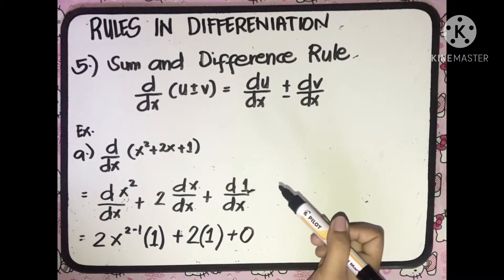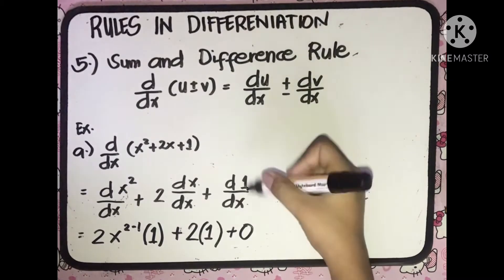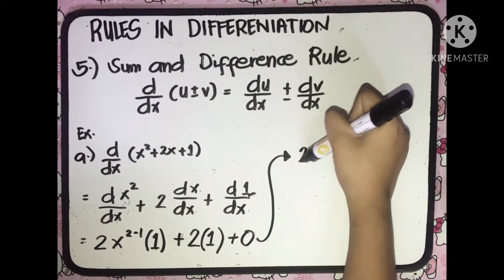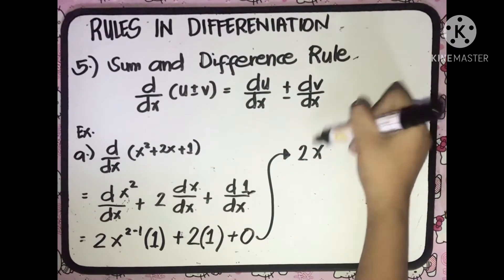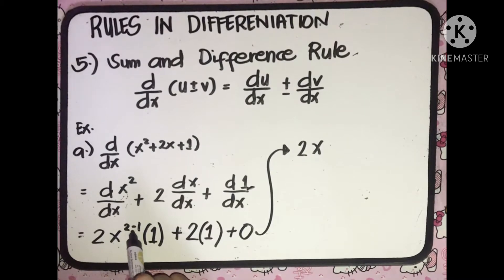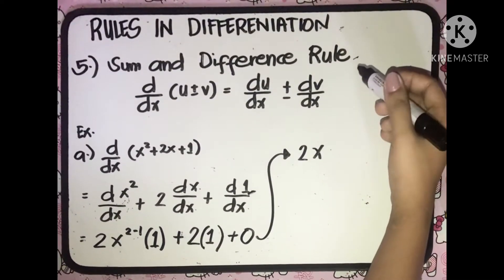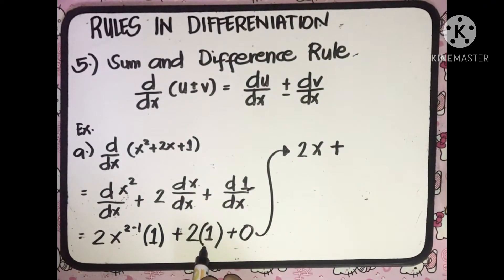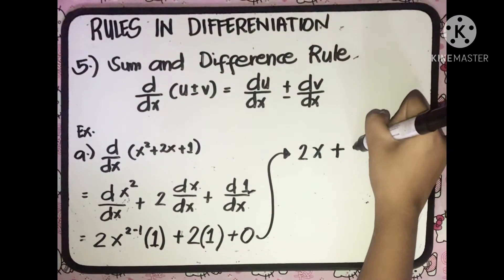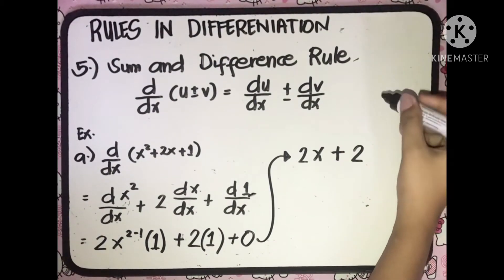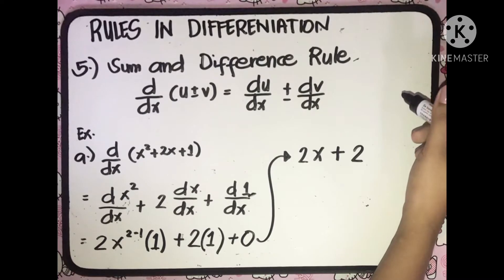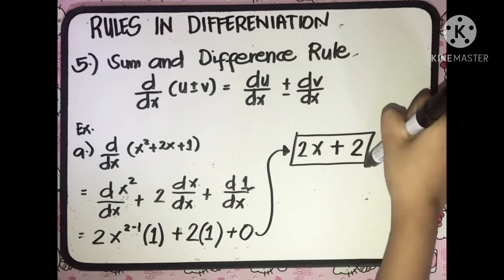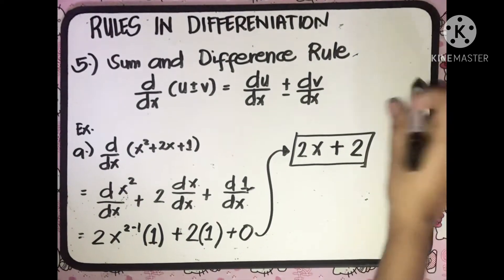So we have plus 0. Simplifying: 2 multiplied by x to the power of 1 equals 2x, plus 2 multiplied by 1 which equals 2. There are no like terms to combine, so the final answer — the derivative of the given function — is 2x plus 2.